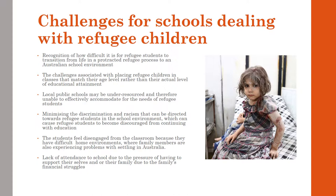Schools need to target discrimination as soon as they notice it and put an end to it. Students may also feel disengaged from the classroom because they have difficult home environments where family members are experiencing problems with settling in Australia. Schools need to be mindful of this and try to help in the best way they can. Schools also need to be mindful of lack of attendance, which may be due to the pressure of having to support themselves or their family due to financial struggles.